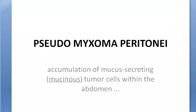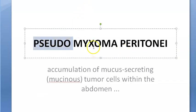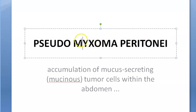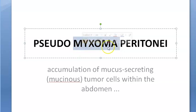In this video, let us look at pseudomyxoma peritonei. What is myxoma? Myxoma — as you have heard atrial myxoma in the heart — actually refers to primitive connective tissue.